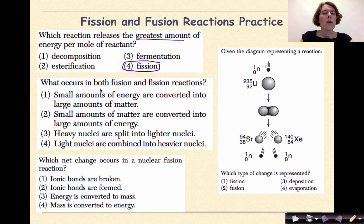What occurs in both fusion and fission reactions? Small amounts of energy are converted into a large amount of matter. Small amounts of matter are converted into a large amount of energy. Heavy nuclei are split into lighter nuclei. Light nuclei are combined into heavier nuclei. Okay, so number three is out. Heavy nuclei are split into lighter nuclei—that only goes with fission and not fusion. The same thing: light nuclei are combined into heavier nuclei—that's the definition of fusion. So three and four are out. What they both do is that they both convert small amounts of matter into large amounts of energy. So it's all about ME: matter into energy. It's one way to keep it straight.